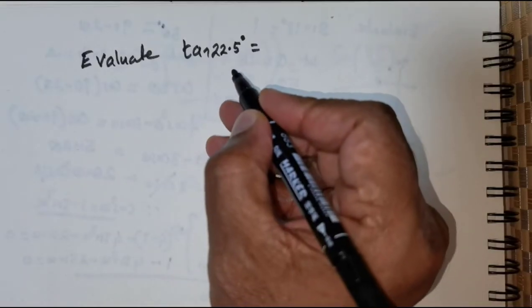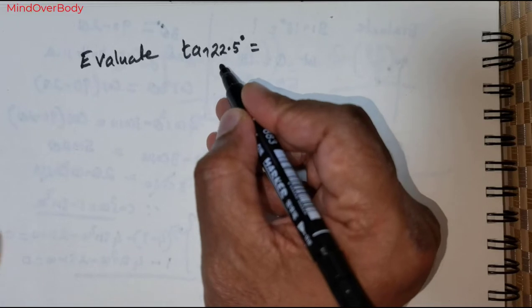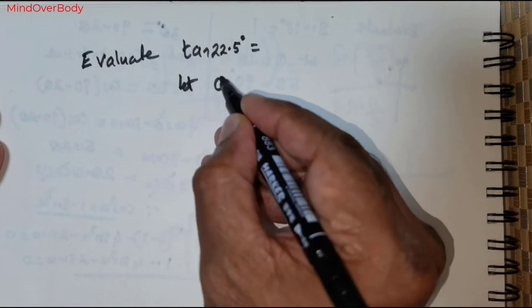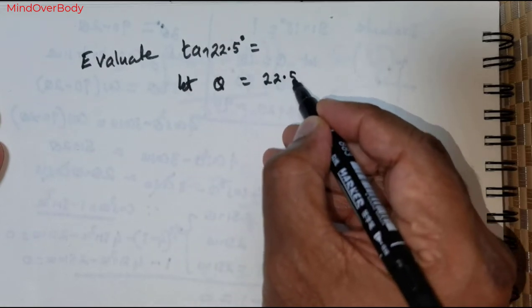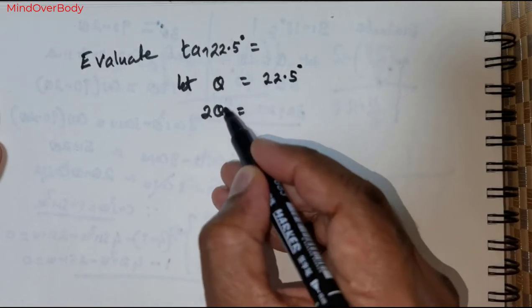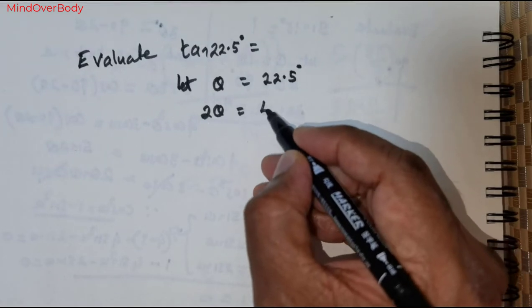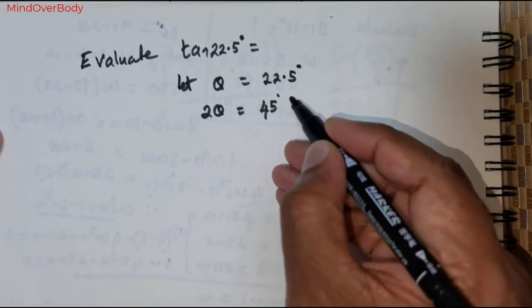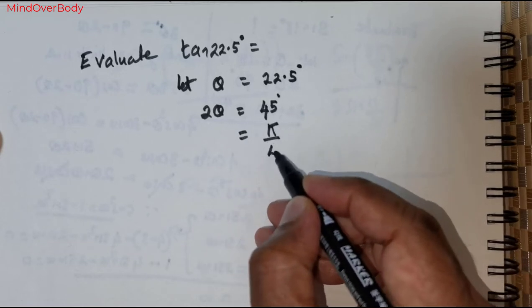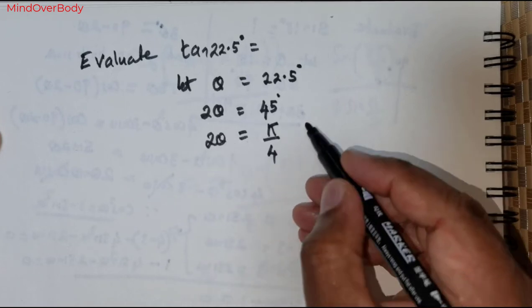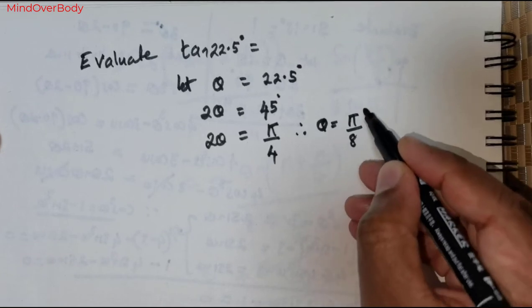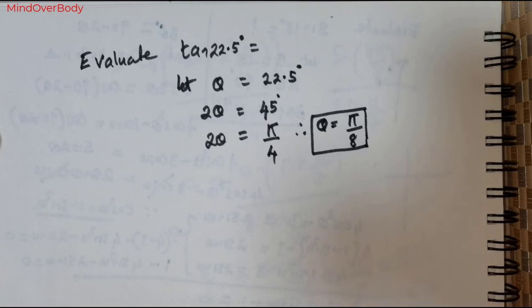Hello everyone. We are expected to evaluate and get the value for tan 22.5 degrees. Foremost, I would like to let theta be equal to 22.5 degrees and multiply both sides by 2. This gives me 2 theta equal to 45 degrees, which in radians is pi over 4. So 2 theta equals pi over 4, and therefore theta equals pi over 8. This is a good substitution for theta.